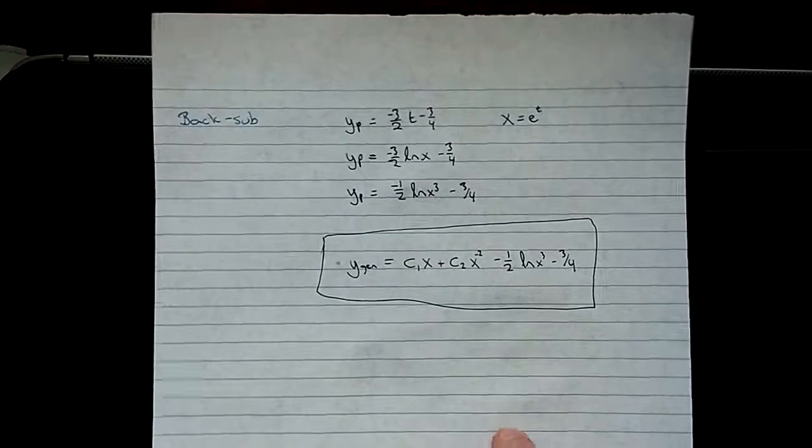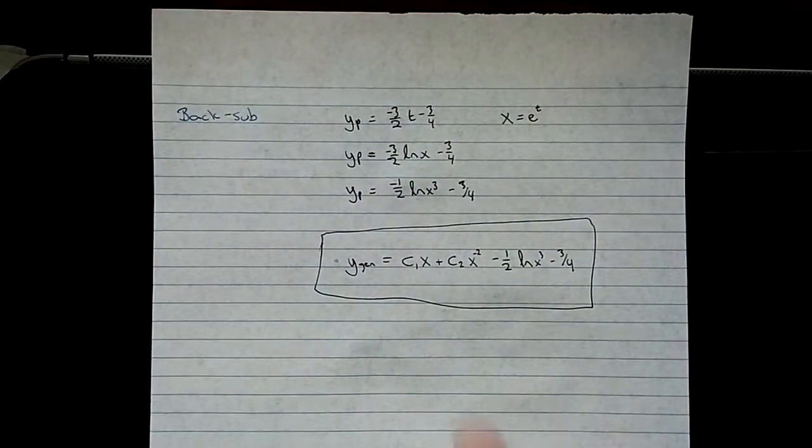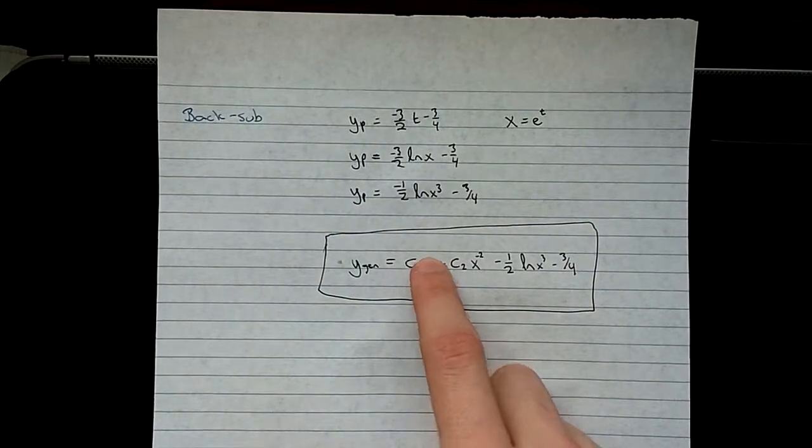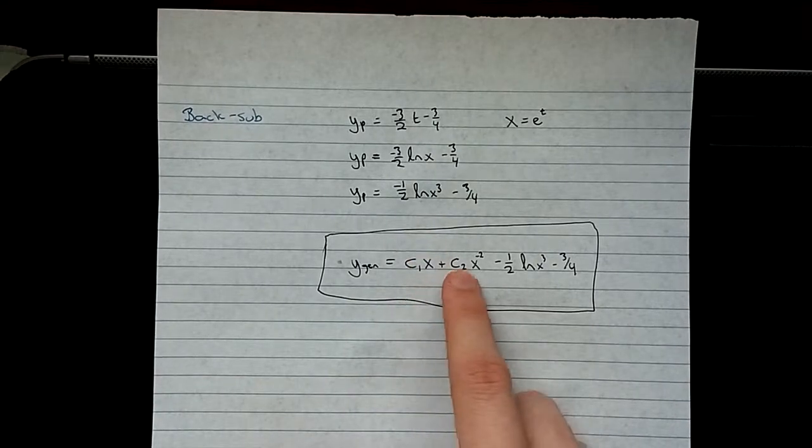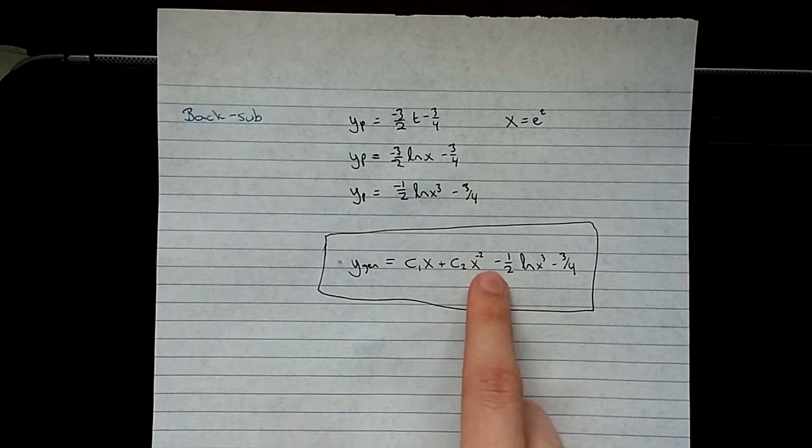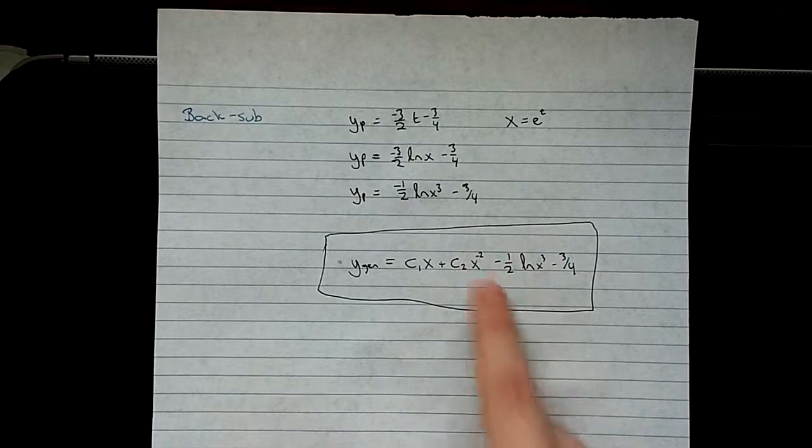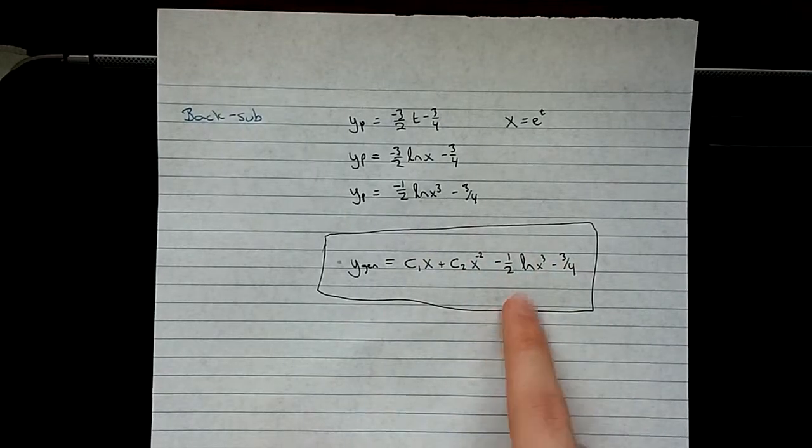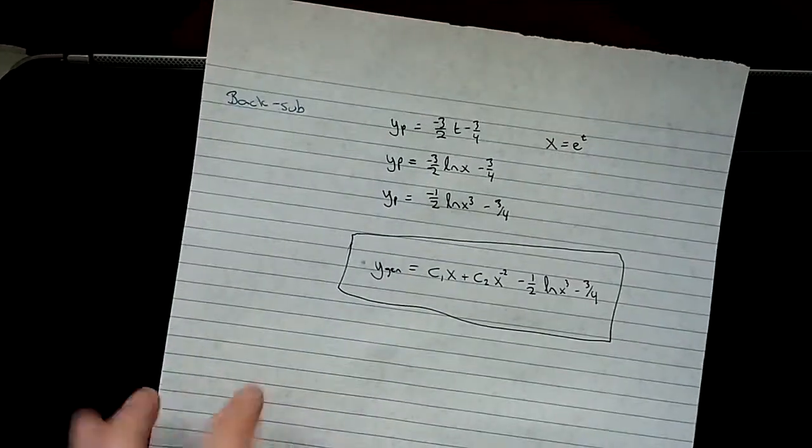So then combining with our homogeneous solution, you have c1 x to the power of s1, which is 1, plus c2 x to the power of s2, plus our particular solution, which we found up here. And that's it.